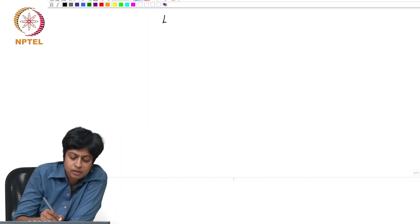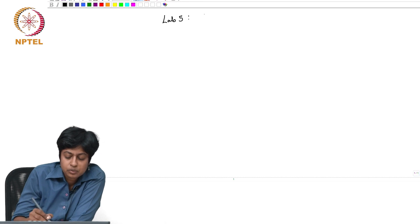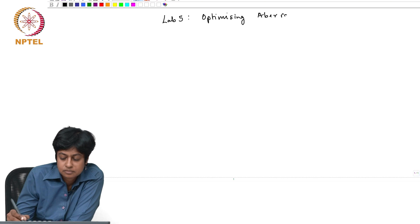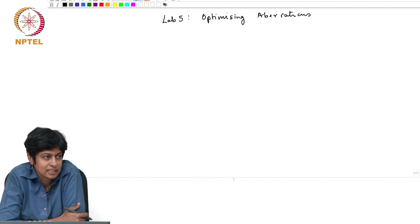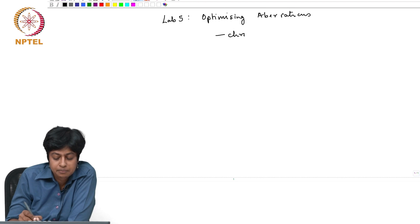Good afternoon. We are on our fifth lab class, and today's class is as usual going to be related to what you have been learning. It is mostly going to be on the lab on optimizing aberrations. You have several exercises that you need to carry out. The first few exercises relate to chromatic aberration.